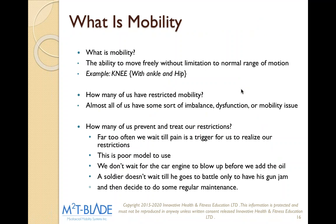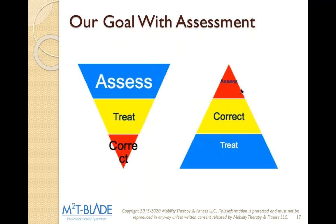What is mobility? The ability to move freely. Our goal with assessment — we want to spend most time assessing, treating, and then correcting. Assessment is the cornerstone of treatment. Currently what we see is the opposite: very small assessment, a lot of exercise, and most time spent treating. One of the things we love with the M2T Blade is it really cuts down on treatment time — it saves your hands and lets you get better results faster and more efficiently.